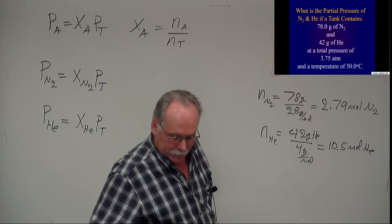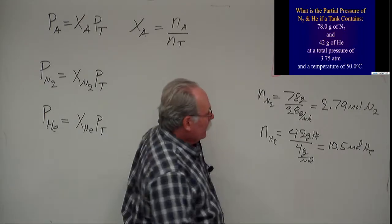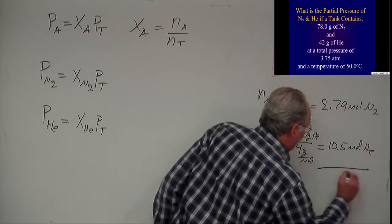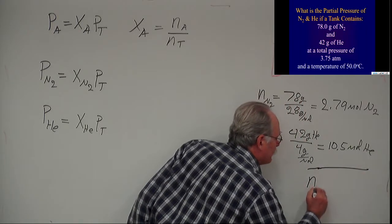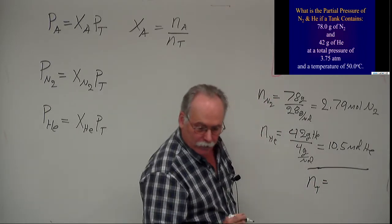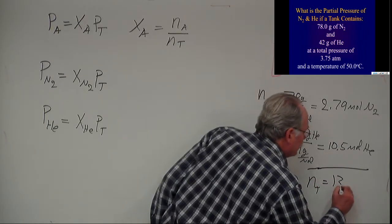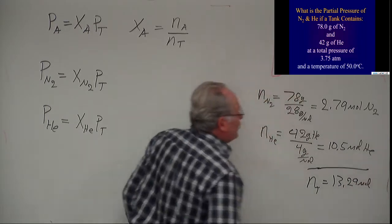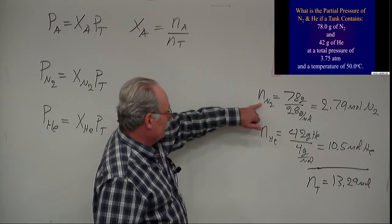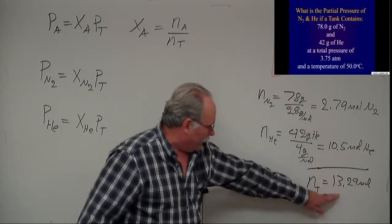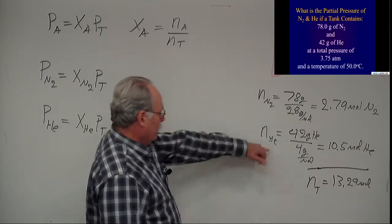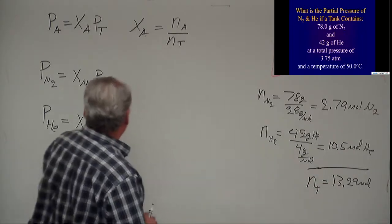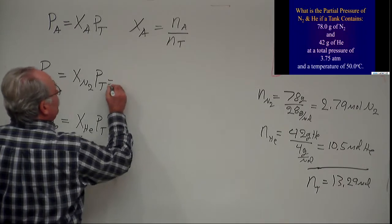Now we add these two up. We take the 10.5 and the 2.79, and when we add them up, we get the total number of moles, which is 13.29 moles. Now I can calculate the mole fraction of nitrogen, which is 2.79 divided by 13.29, and the mole fraction of helium, which is 10.5 divided by 13.29, but I'm just going to plug them in.